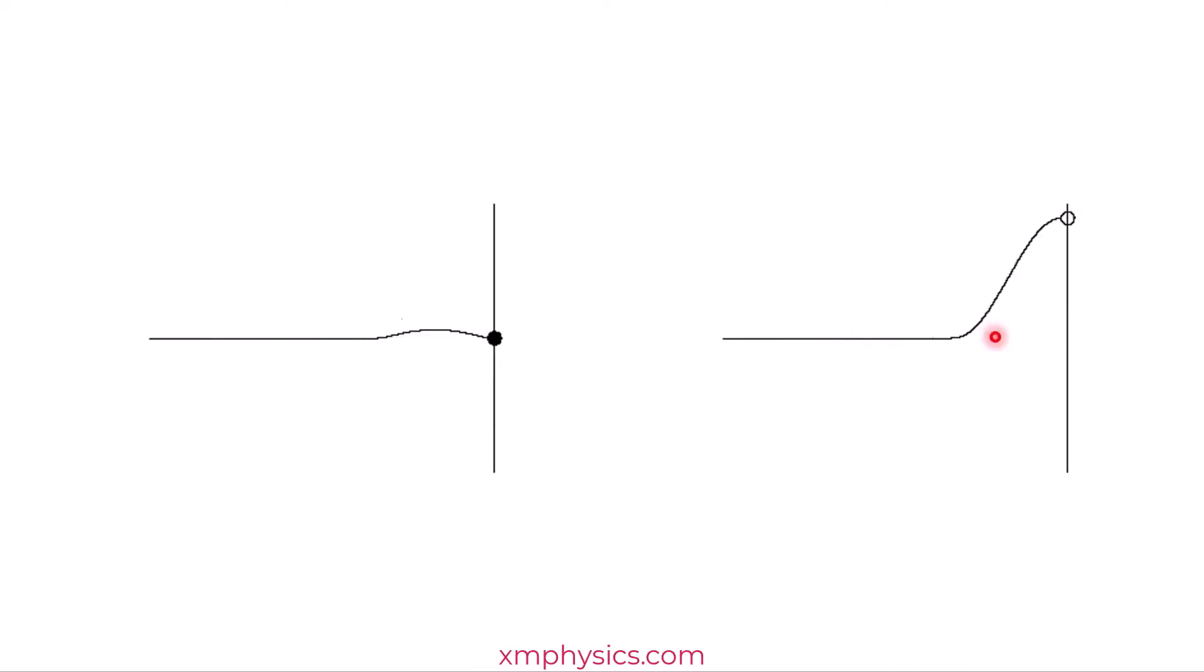But over on this side, when this pulse meets a loose end, it reflects but without any phase change. You see that positive pulse, it travels rightward, hits the loose end, it reflects but there's no flipping. A positive pulse is reflected as a positive pulse. So we say that there's no phase change in such a reflection.